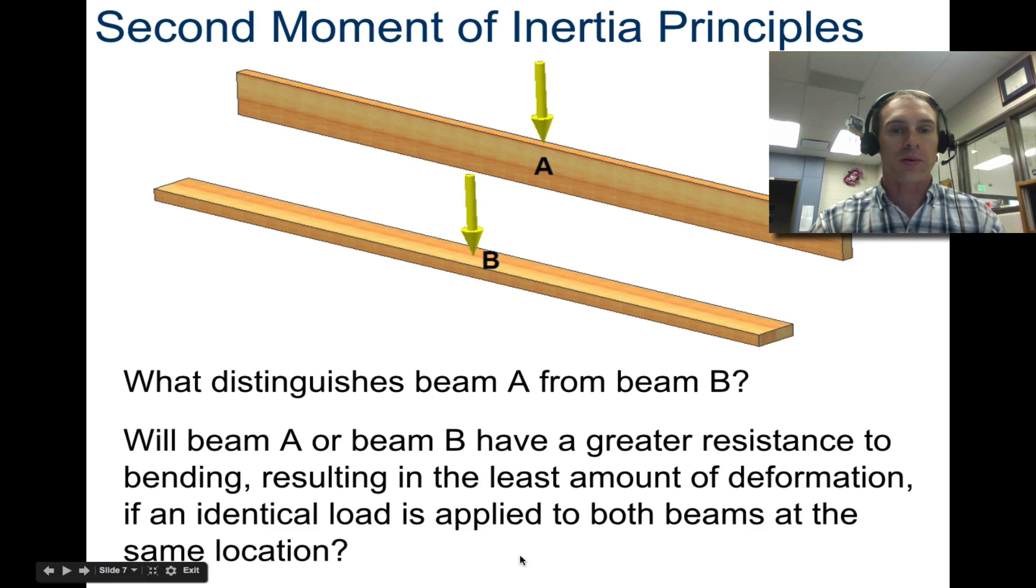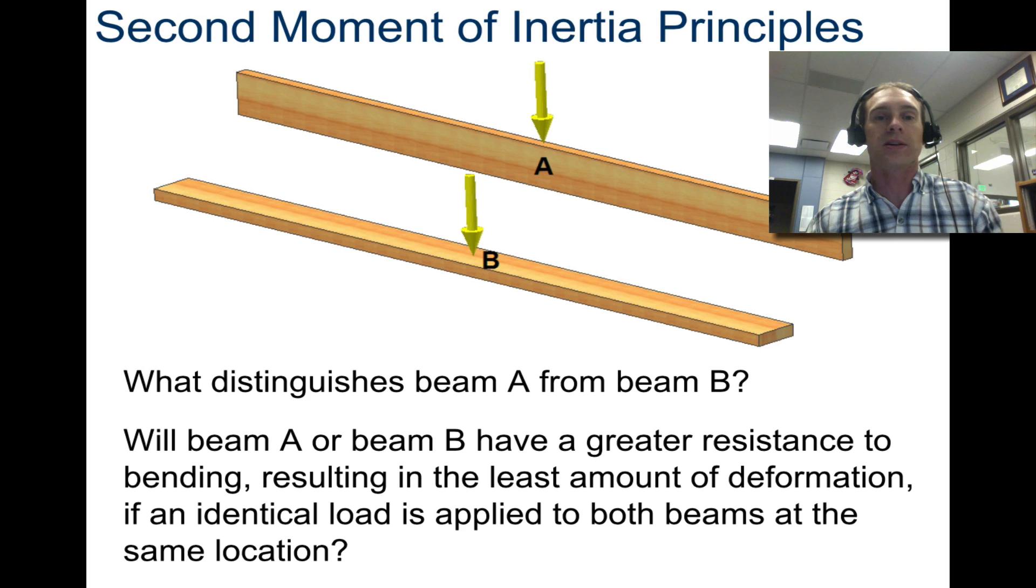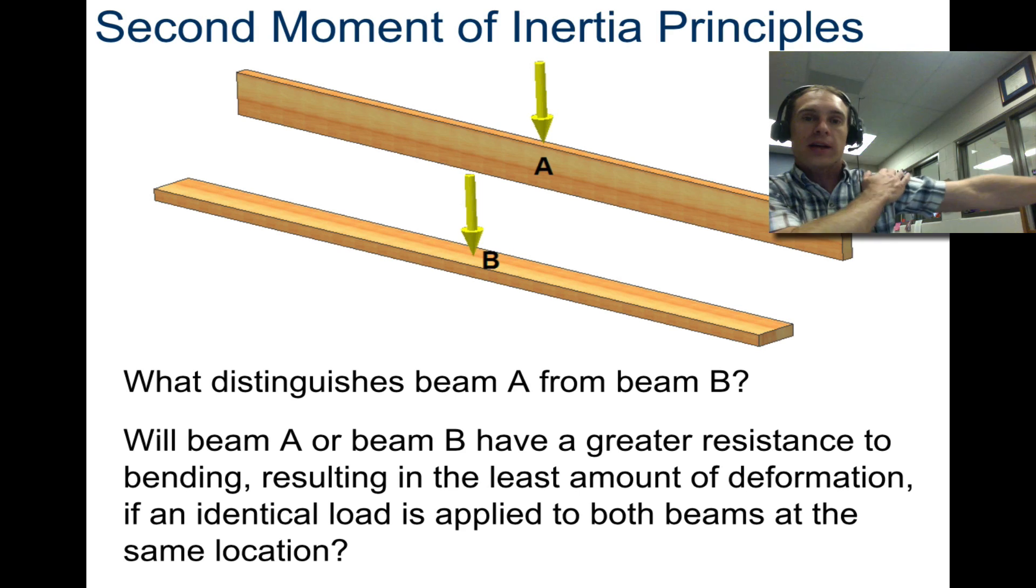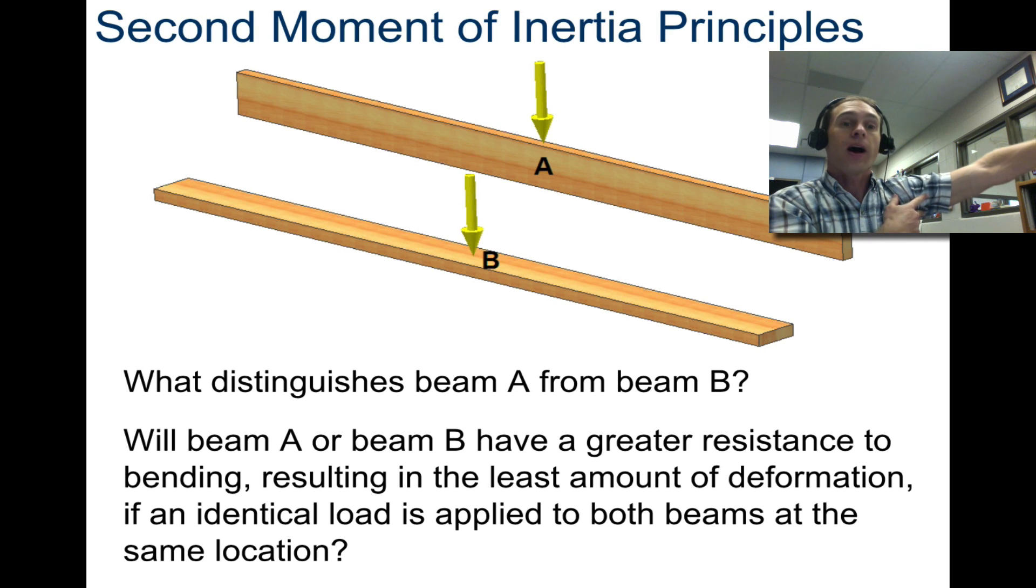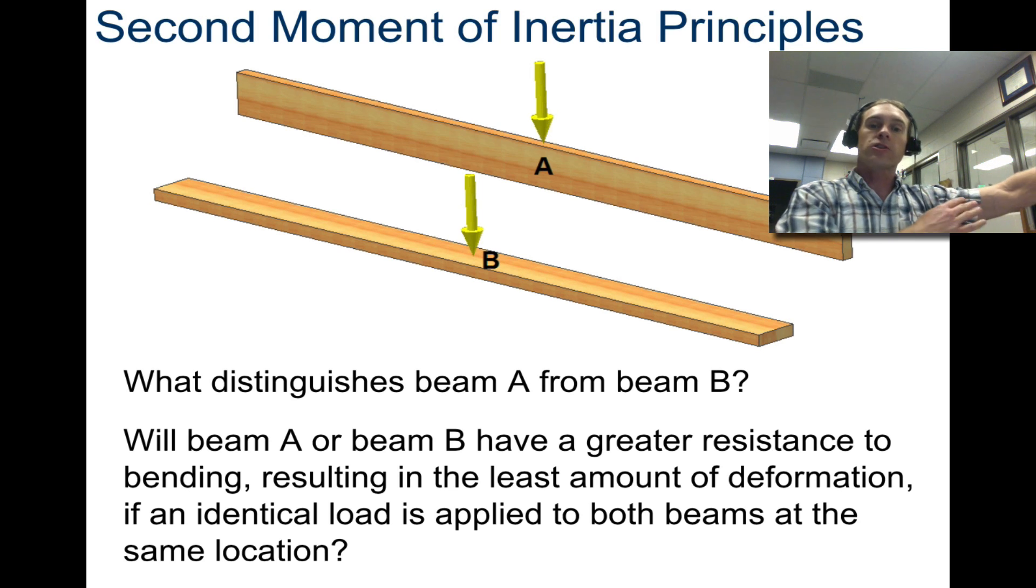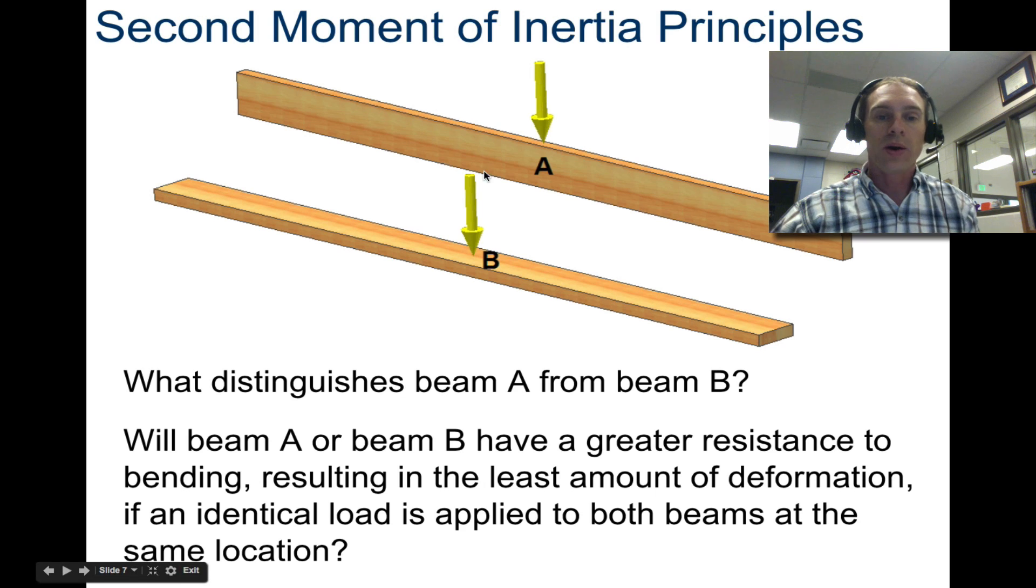The question here that we're trying to ask ultimately is, will beam A or B have a greater resistance to bending, resulting in the least amount of deformation if an identical load is applied to both beams at the same location? We need to know this because if you're designing an aircraft, knowing second moment of inertia principles is really important, knowing how strong something is going to be because it needs to be able to withstand forces. If you think about how wings are attached to the fuselage, those wings have to be able to support their entire weight, along with the inertia of it slamming into the ground and bouncing without breaking. Making sure that it's strong enough to support that and also knowing that orientation of that material can affect it is critical.